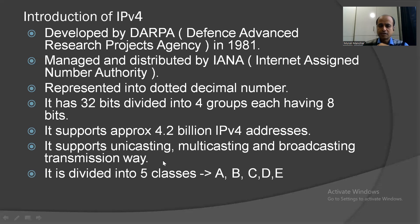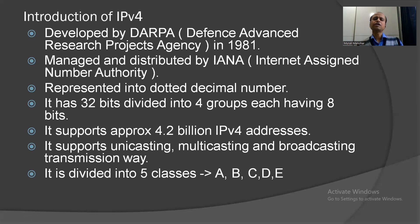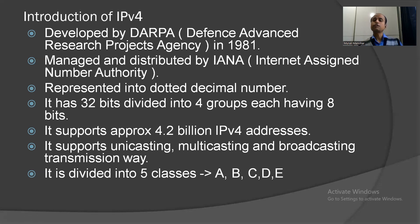These 4.2 billion IP addresses have been divided into a few classes. They are divided into classes to form networks of different sizes. Class A supports very large networks — a single network can connect a huge number of nodes. Class B supports fewer nodes, Class C very few nodes, and Classes D and E serve different purposes. So to form different sizes of networks, IPv4 addresses are divided into five classes.